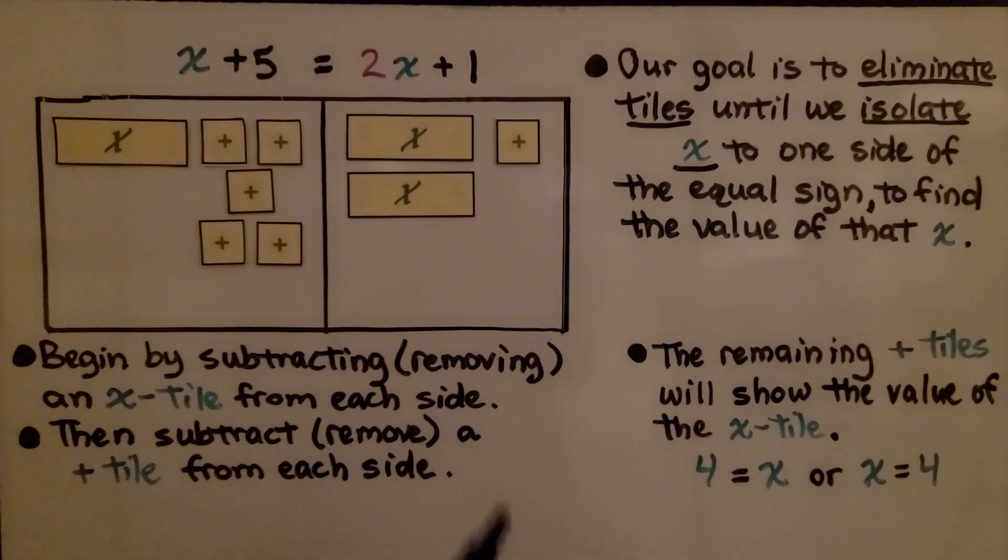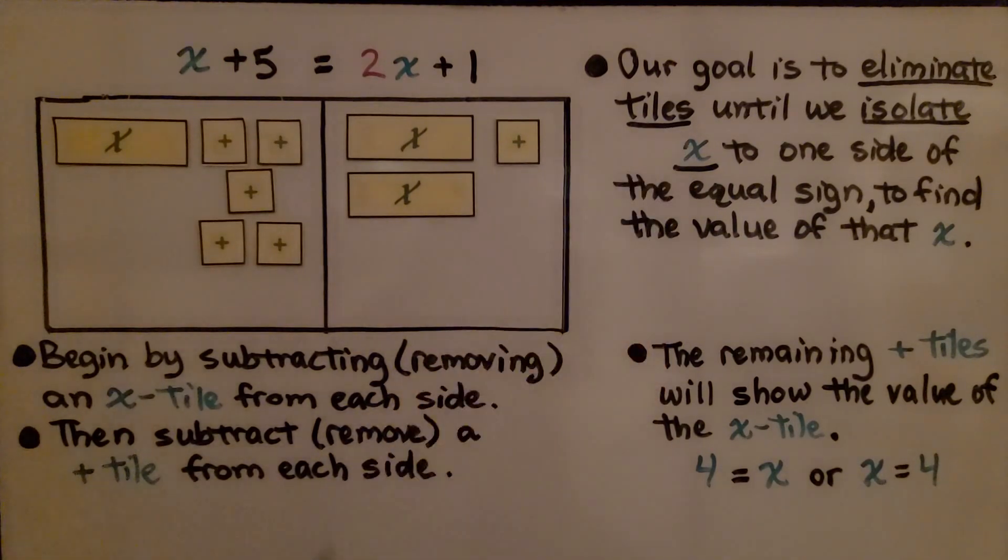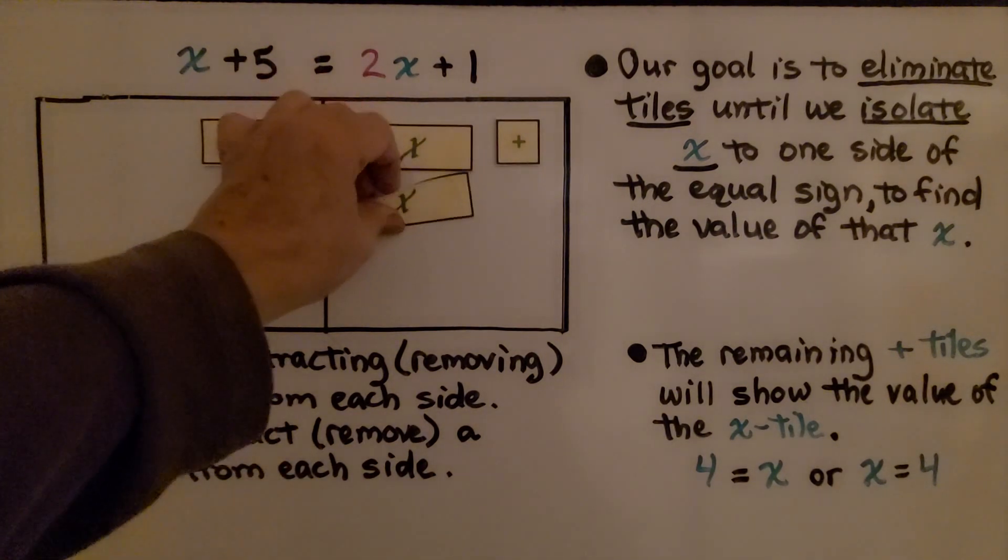Our goal is to eliminate tiles until we isolate one x to one side of the equal sign to find the value of that x. We begin by subtracting, removing, one x tile from each side. We take an x tile away from this side and we take an x tile away from this side.